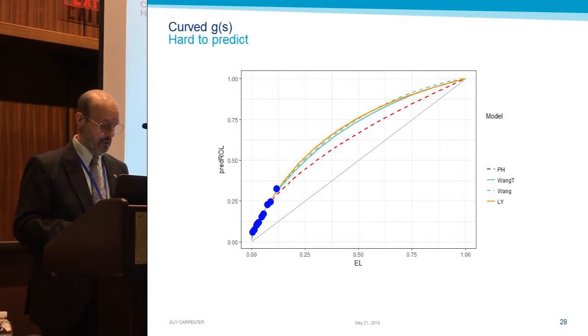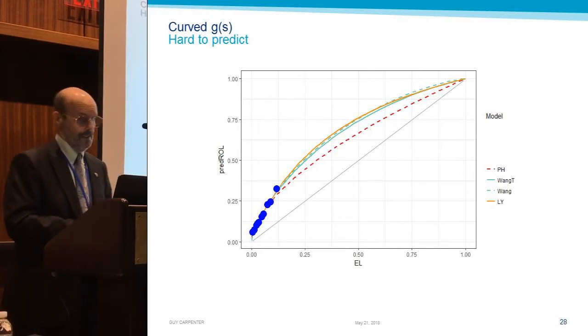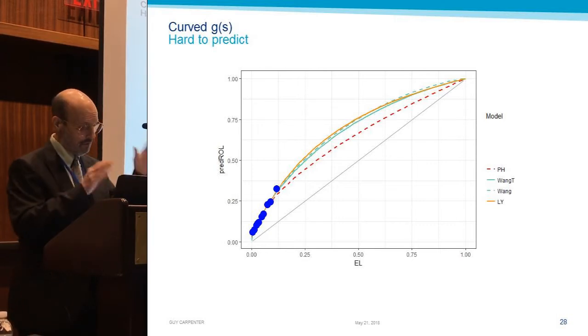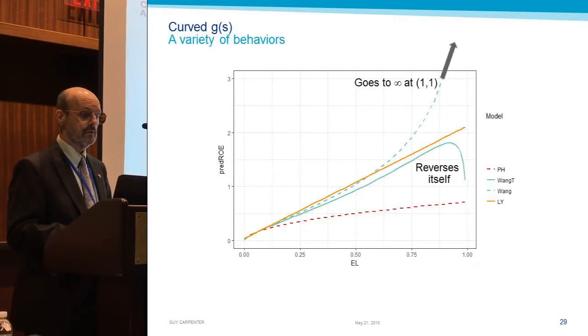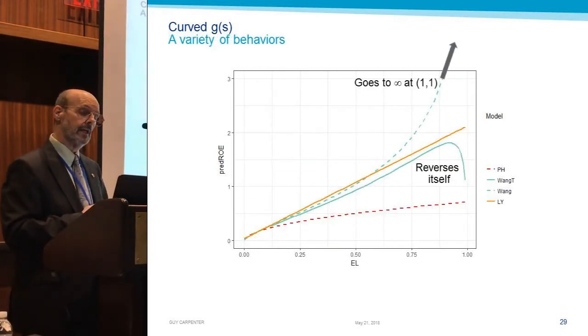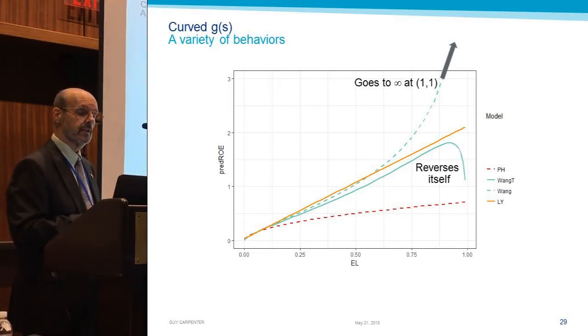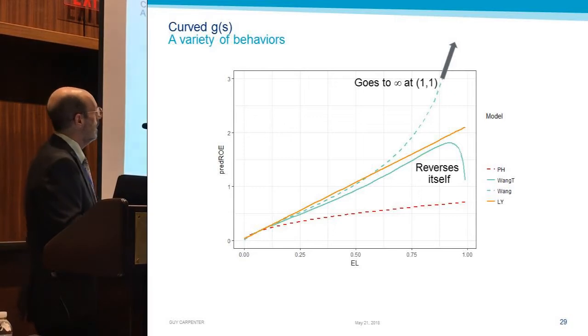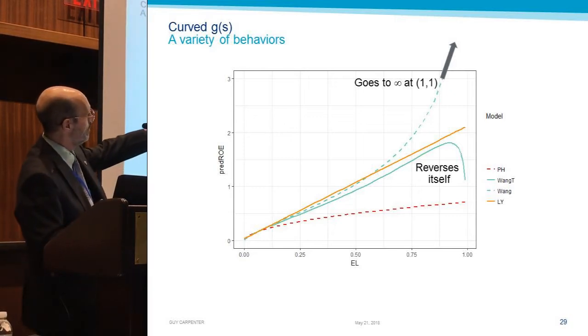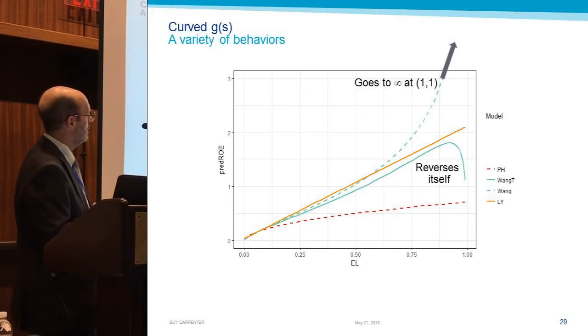So that leaves us these other curved ones, and eyeballing this it's hard to say. So we'll jump straight to the ROE perspective. Oh, okay, this is interesting. The Wang transform, the dashed green, that cruises up and up and up and eventually diverges to infinity as you get close to one on the expected loss probability scale.